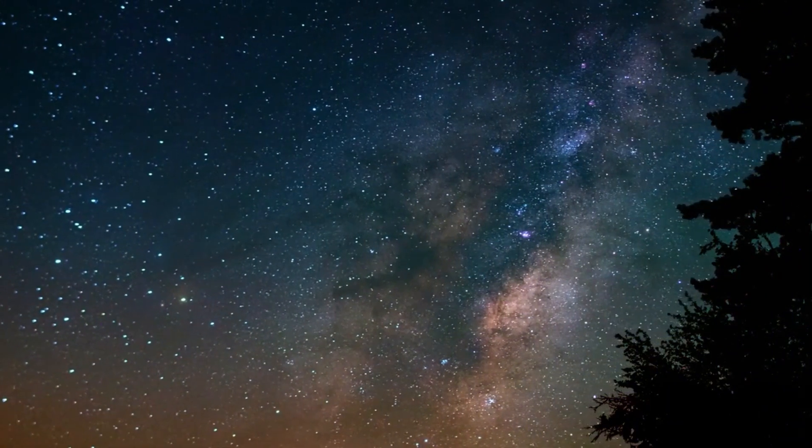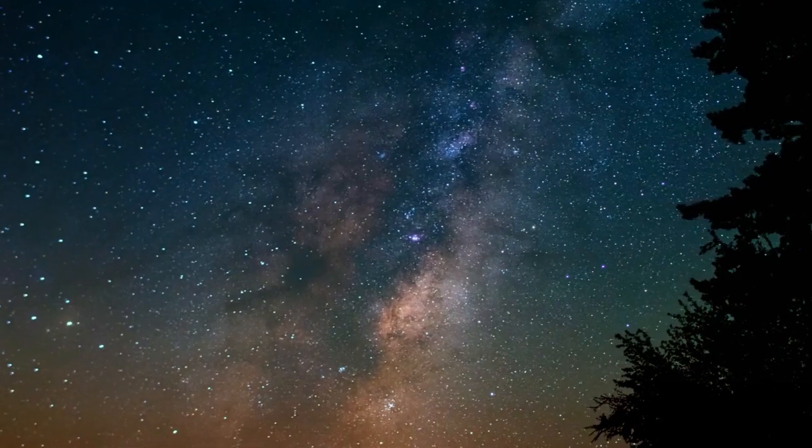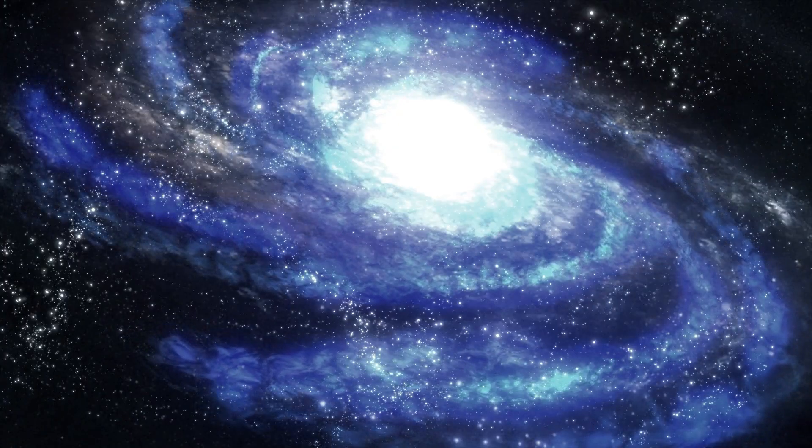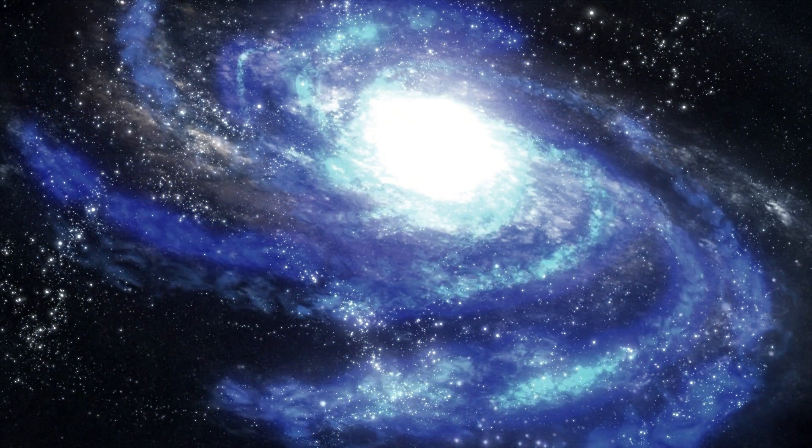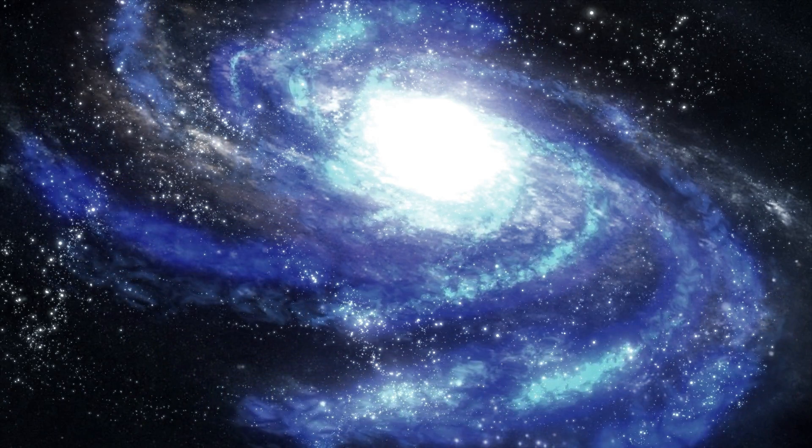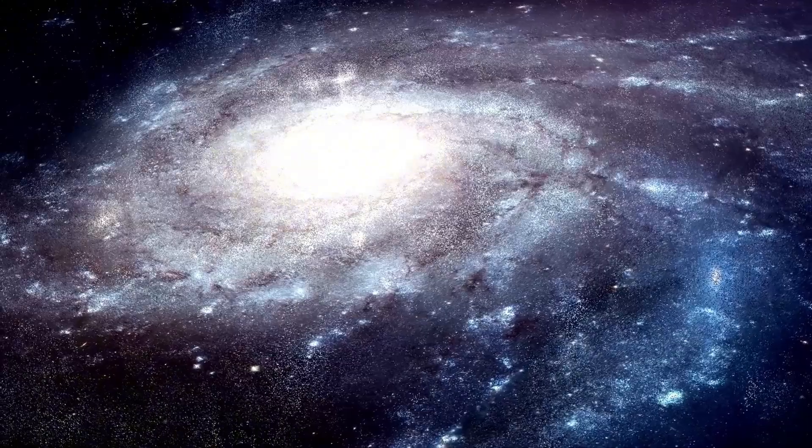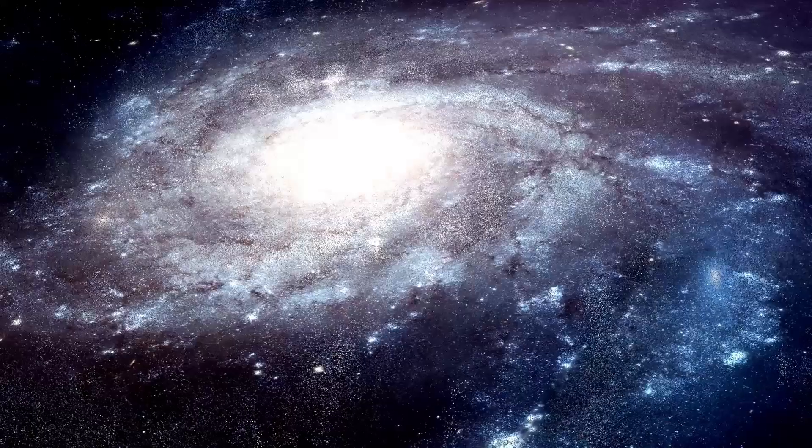Betelgeuse's eventual explosion will also have a profound effect on nearby objects. If it were to go supernova within the next several million years, it could send shockwaves through the surrounding space, potentially affecting nearby stars, planets, and even our own solar system. Although the distance between Earth and Betelgeuse is vast, the energy released in such an explosion could still have observable effects on our planet. Increased cosmic radiation could potentially impact Earth's atmosphere and even affect life forms, though this is still a matter of debate among scientists.